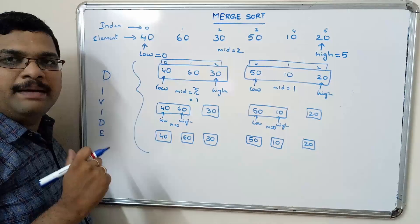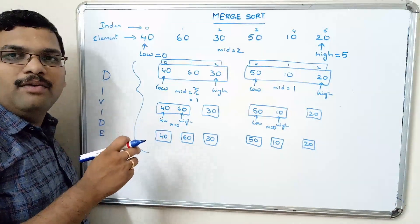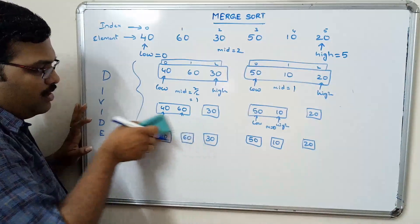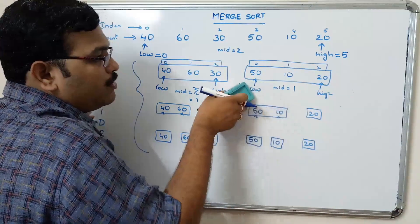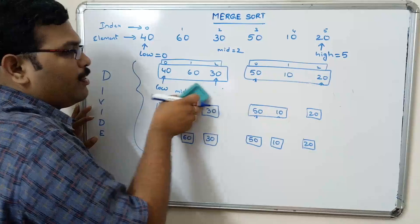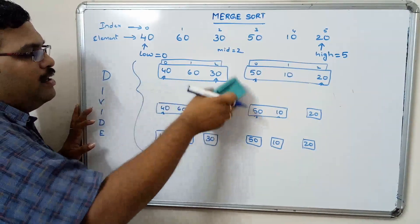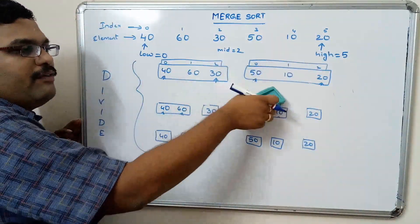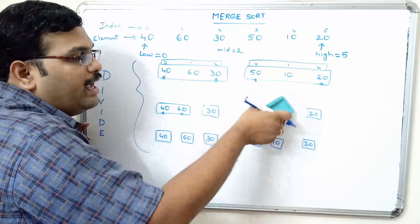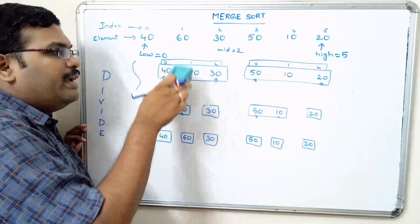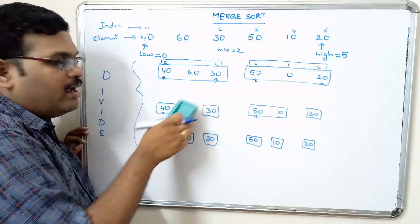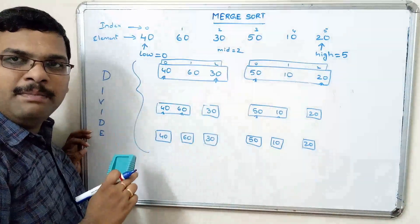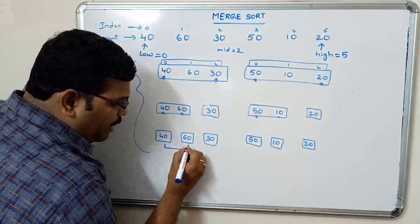Now we have to conquer them by merging. For each group find the low and high, calculate the mid, and divide the elements into two groups. Apply the same procedure for each group until we get individual elements. Now we begin comparing these individual elements.